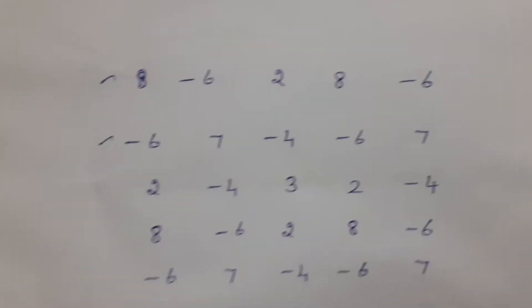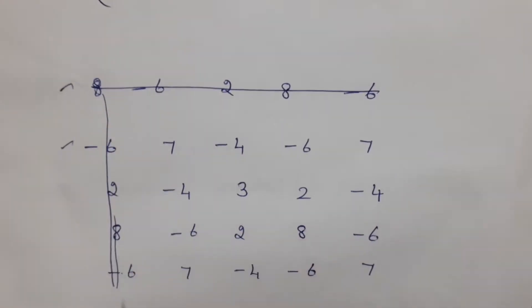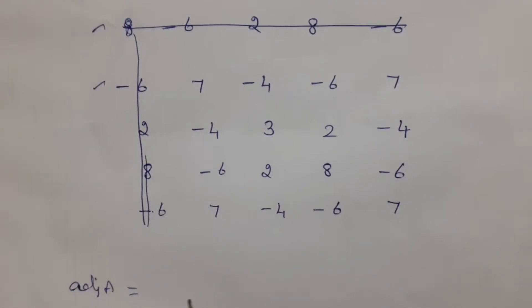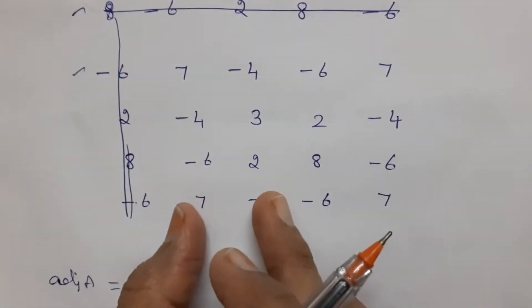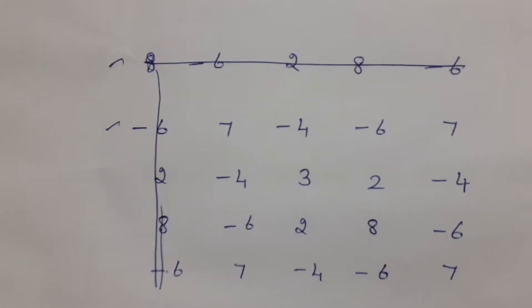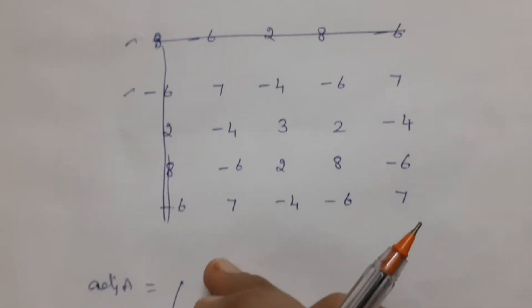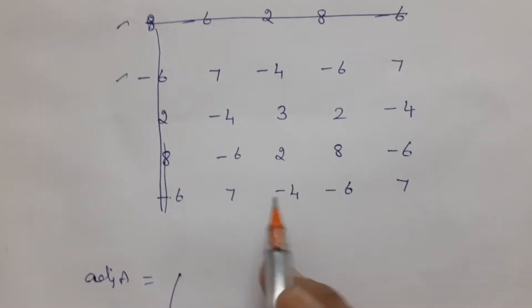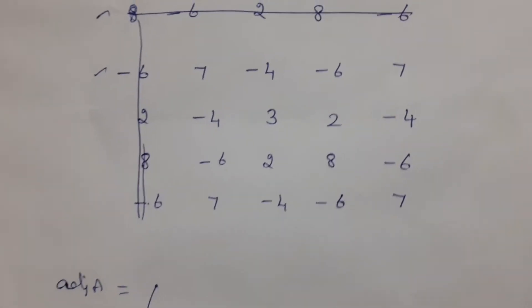Now the next step is to cross the first row and first column. Now let us find the adjoint of the given matrix. You have to proceed with calculations column-wise, but while writing the adjoint, you write row-wise because adjoint is the transpose of the cofactor matrix. So proceed column-wise but write row-wise.